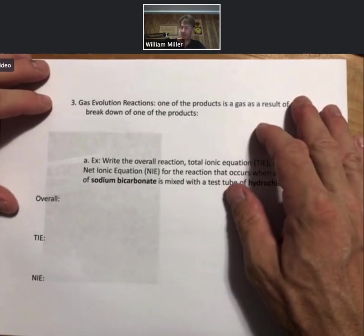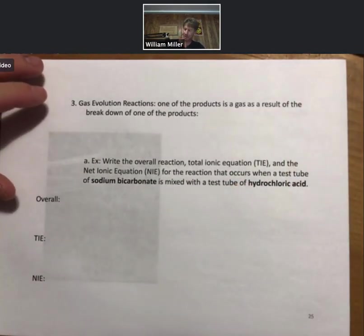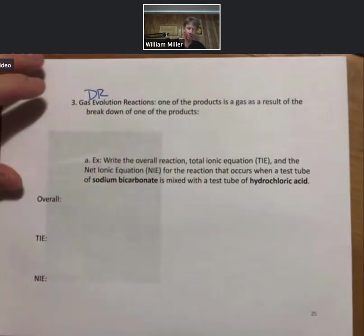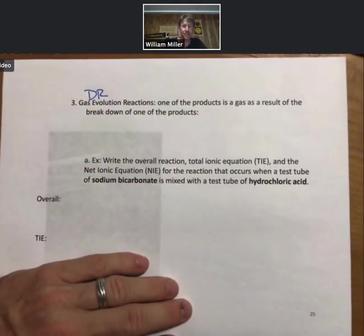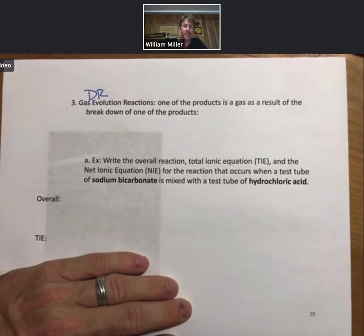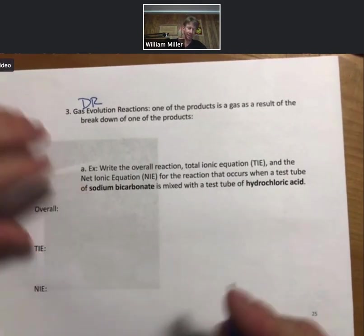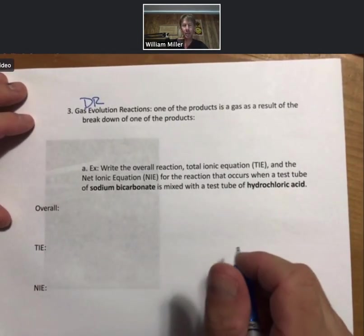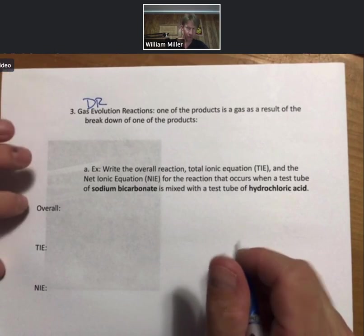And let's motor through this gas evolution reactions. These are the third double replacement type of reaction. One of the products is a gas as a result of the breakdown of one of the products. Let me give you two examples of how this happens.